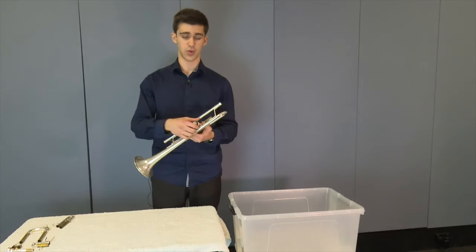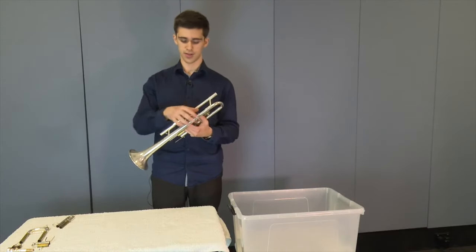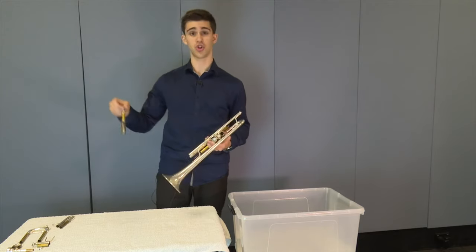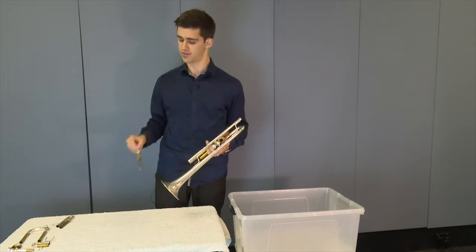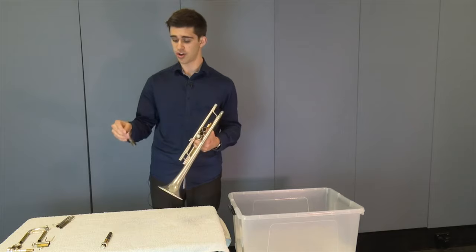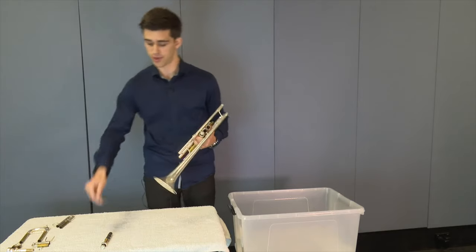Now that we've removed all the slides from the trumpet, it's time to move on to the valves. What you'll want to do is twist anti-clockwise and take out your valve. Be sure to place it on a very clean surface. So I'm going to place it just here on my towel. When placing them down, ensure that they are in the same order as when you took them out.